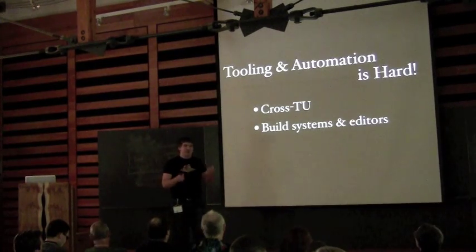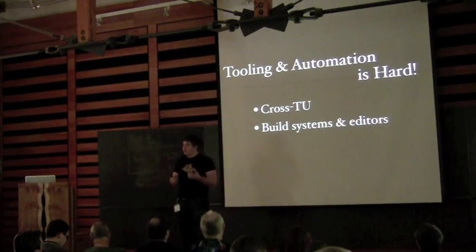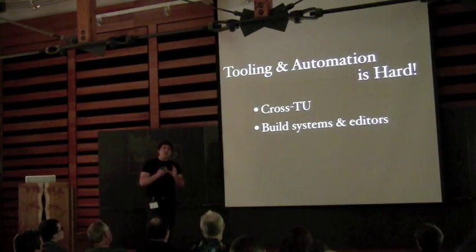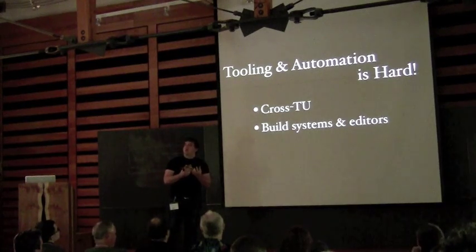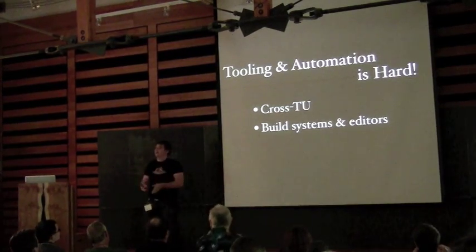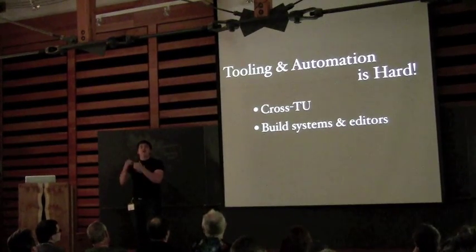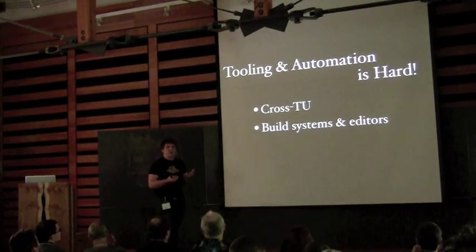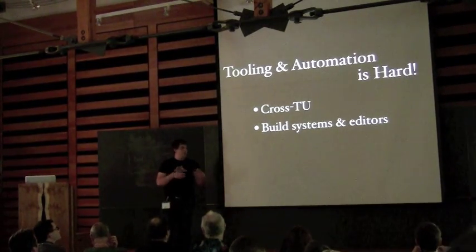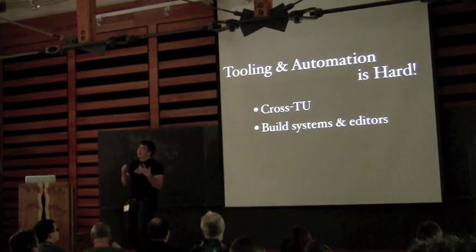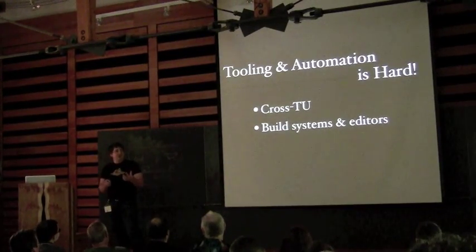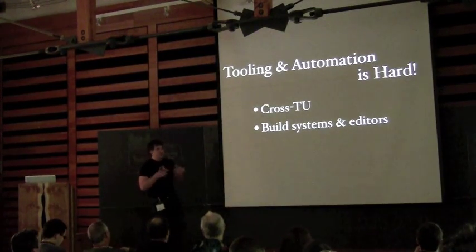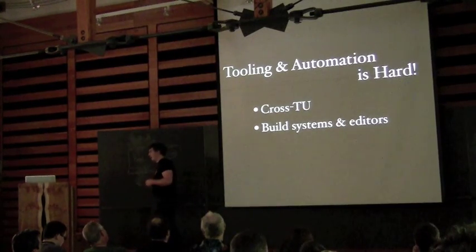You have to integrate with lots of build systems and editors. They're all different, they all work ever so slightly differently, and you can't change these things. A lot of people have tried to build C++ tools by saying if you use our build system and our editor and our integrated development environment, then you'll have these facilities. But that doesn't scale for the C++ development community. It's a very diverse community — different tools, different platforms, different operating systems. And frankly, I never want to try to remove Emacs from anyone's hands. I understand how poorly that will go.